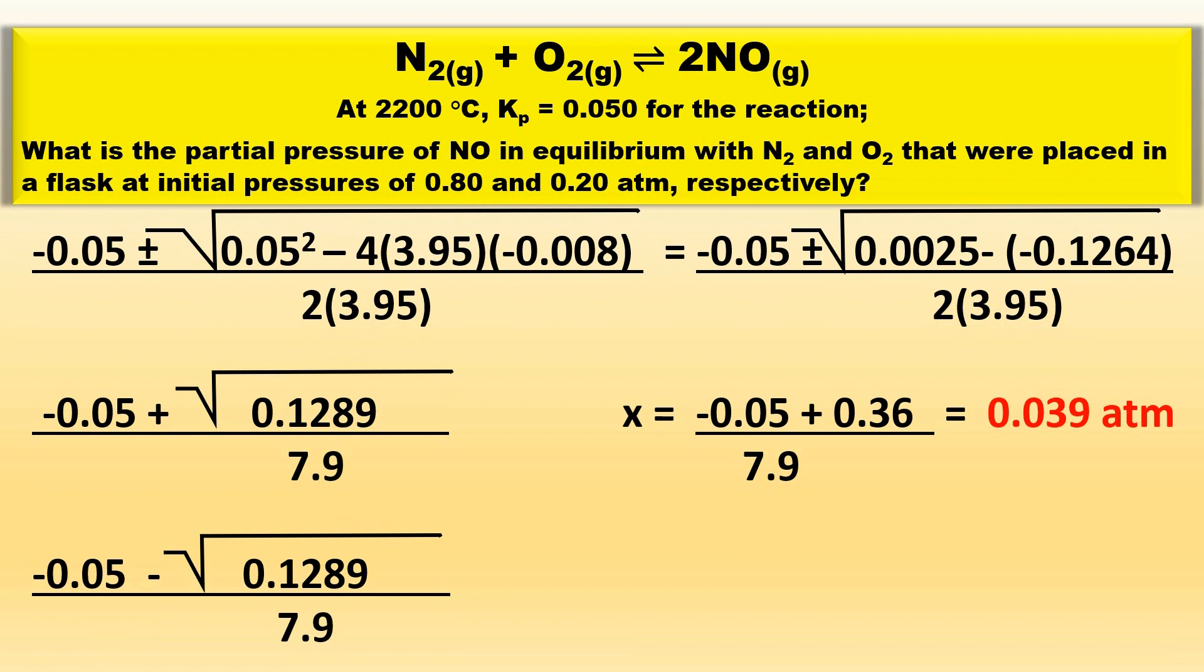Taking the negative root, negative 0.05 minus the square root of 0.1289 divided by 7.9. And x is equal to negative 0.05 minus 0.36 divided by 7.9. So in this particular case, x is equal to negative 0.052 atm.